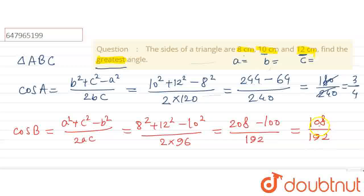And 100 is 10 squared. So 208 minus 100 is 108. And 2 times 96 is 192. Now if we cancel, 4 is common. So 108 by 4 is 27, and 192 by 4 is 48. Now when we cancel again, 3 is common, 27 by 3 is 9 and 48 by 3 is 16. So here we get 9 by 16. So this is cos B value.